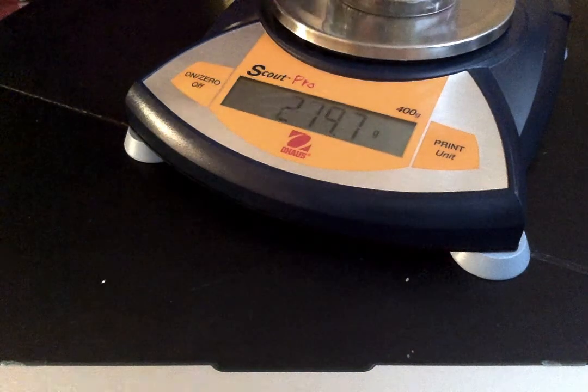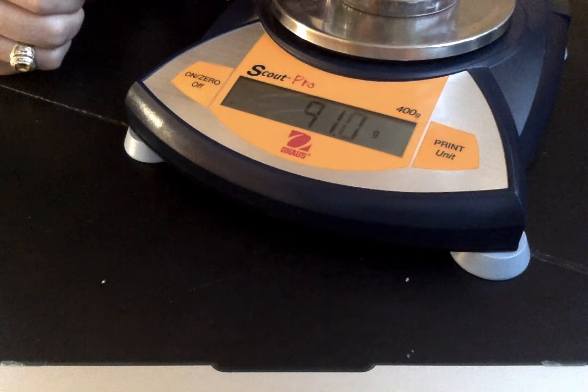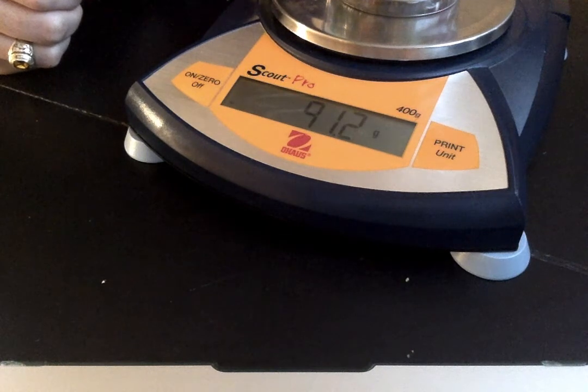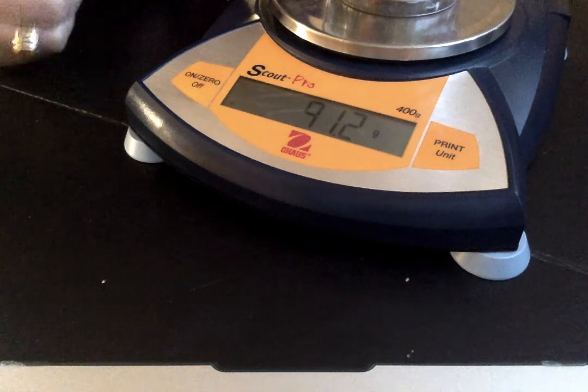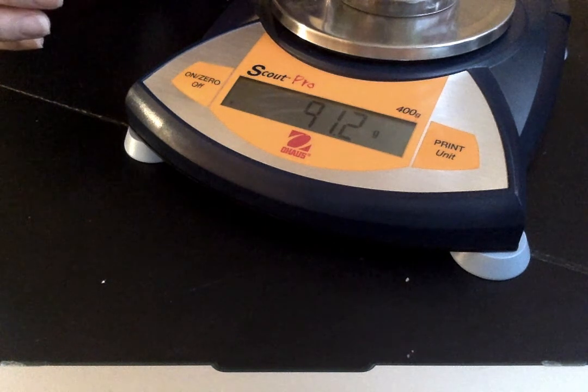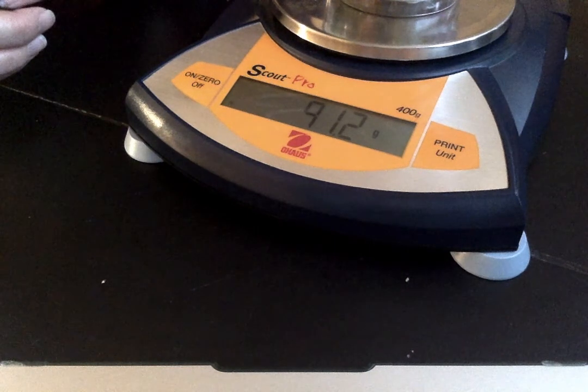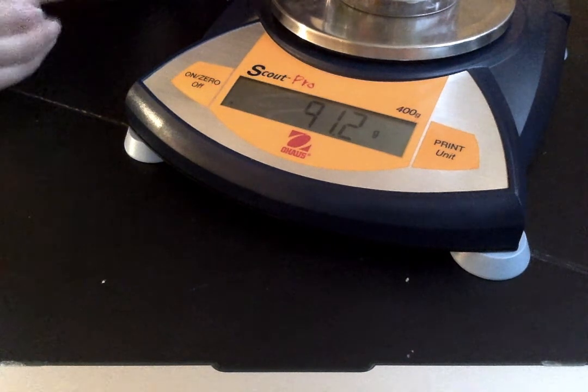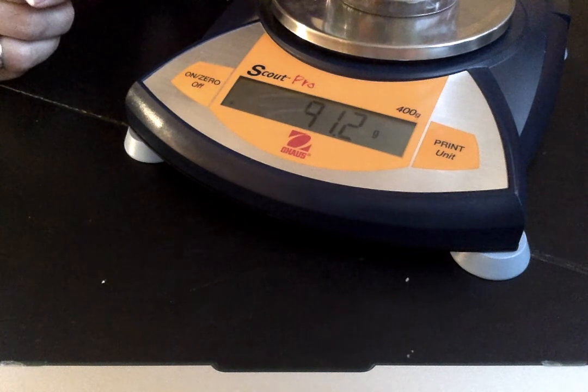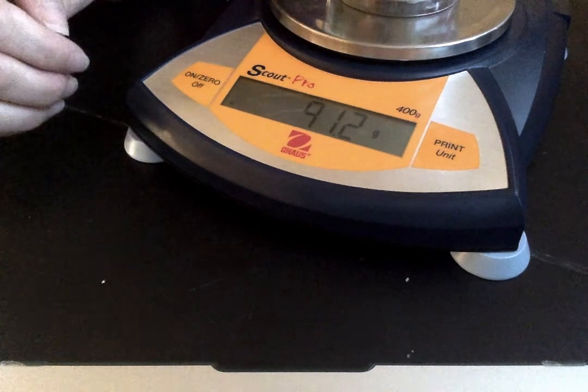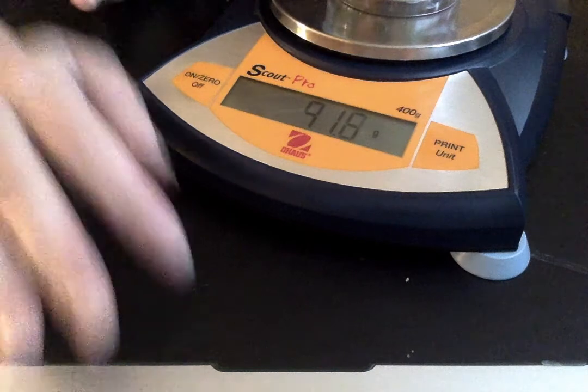Now I put the marbles in, and I can see I have a mass of 91.2 grams. So for those marbles, because it's already subtracted the cup for me, I can know exactly the mass of just the marbles is 91.2 grams. Whereas if I did this with a triple beam balance, I'd have to be doing some subtraction.